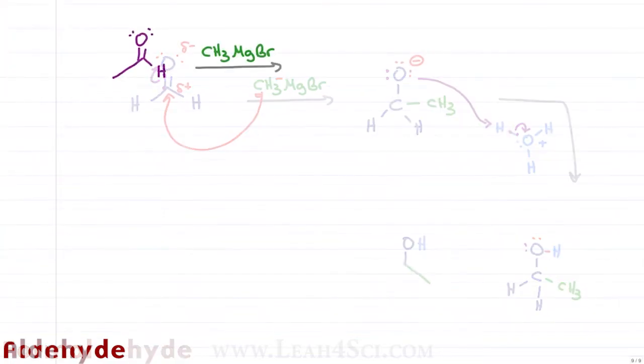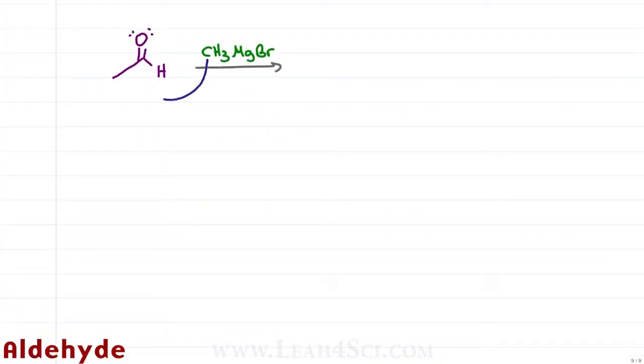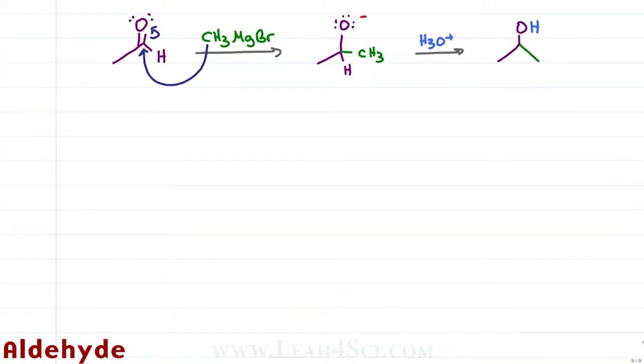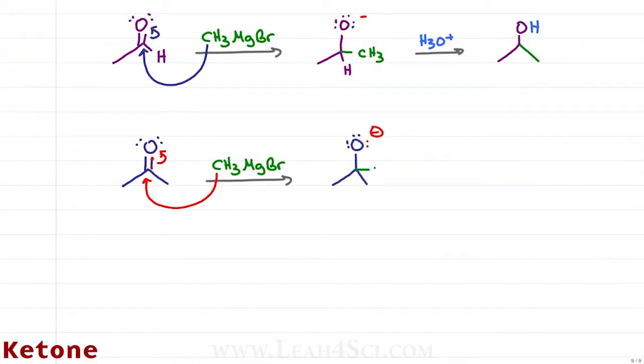An aldehyde follows the same mechanism where the Grignard carbon attacks the carbonyl, kicking up the pi electrons to give me an O- and a new bond to the Grignard carbon. Add an acid to protonate and we get an alcohol for the final product. A ketone will follow the same mechanism where the Grignard attacks the carbonyl carbon, kicking up the pi electrons to give me a negative oxygen and a new bond to the Grignard carbon, followed by protonation to give me a neutral alcohol.